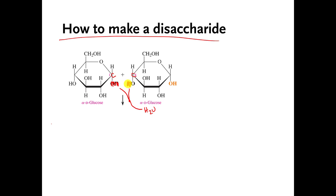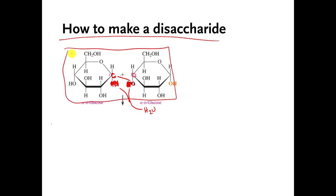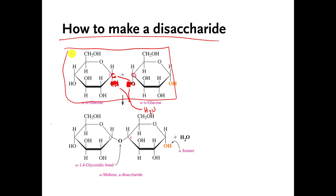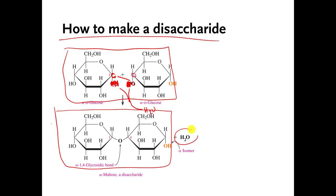But now these molecules have a problem. This carbon needs an attachment because I just ripped one of its attachments away. This oxygen also needs an attachment because I ripped the hydrogen away. So what your cell can do is connect that carbon to that oxygen. And once I connect them to each other, I've made a disaccharide — a bigger molecule from two smaller ones. Here's the connection, and here's the water that got made, because we ripped the pieces of water out and made a water molecule.